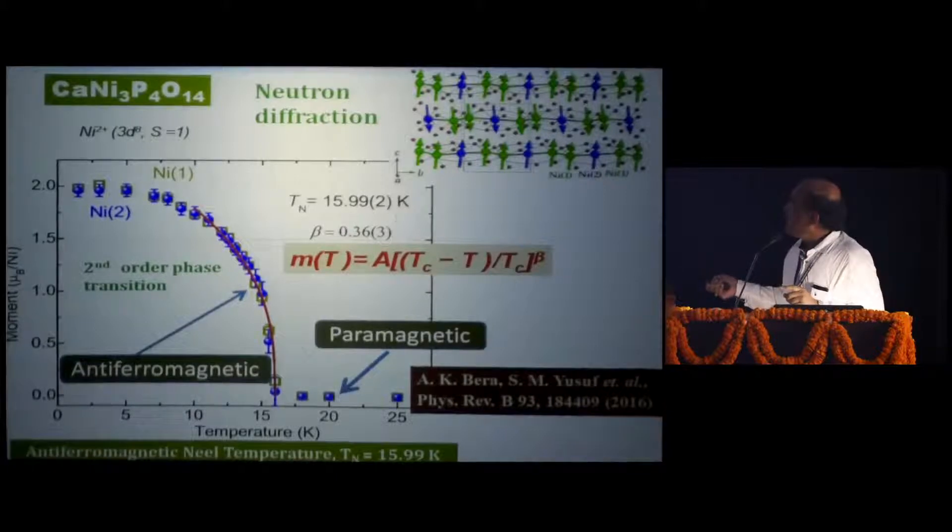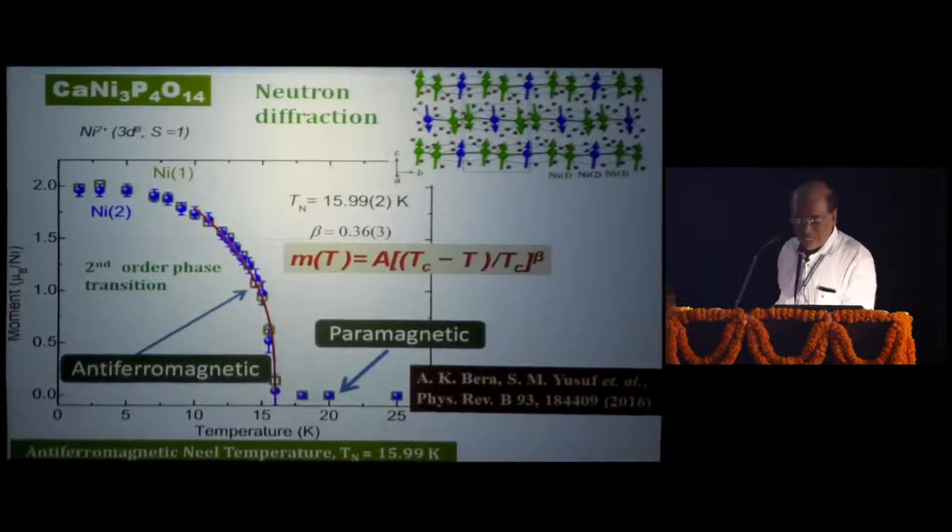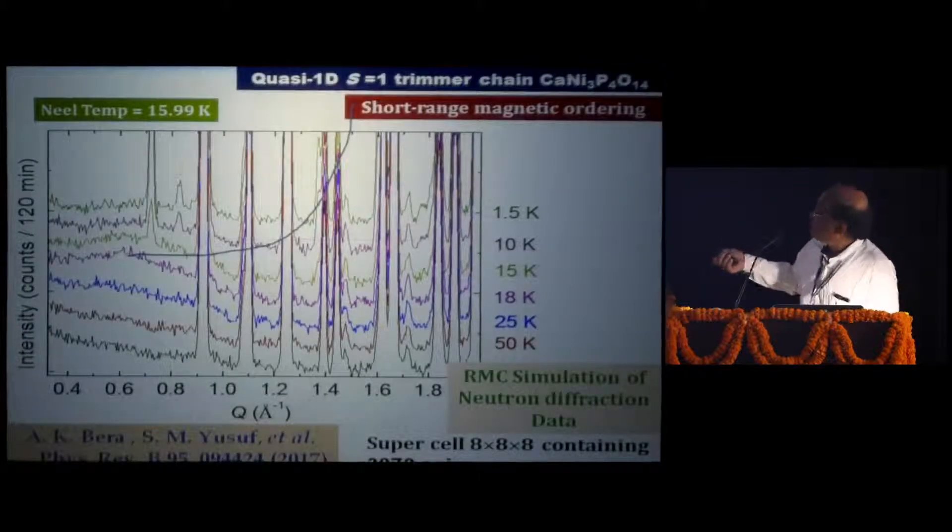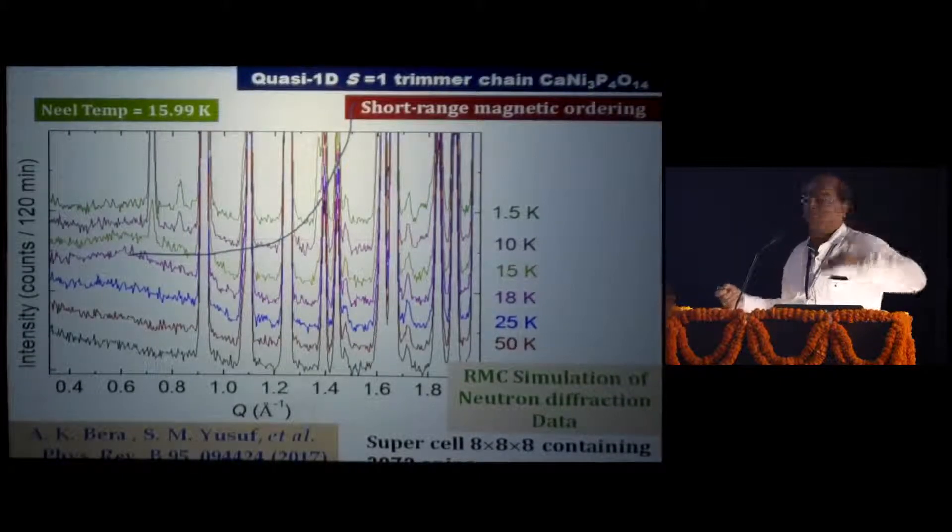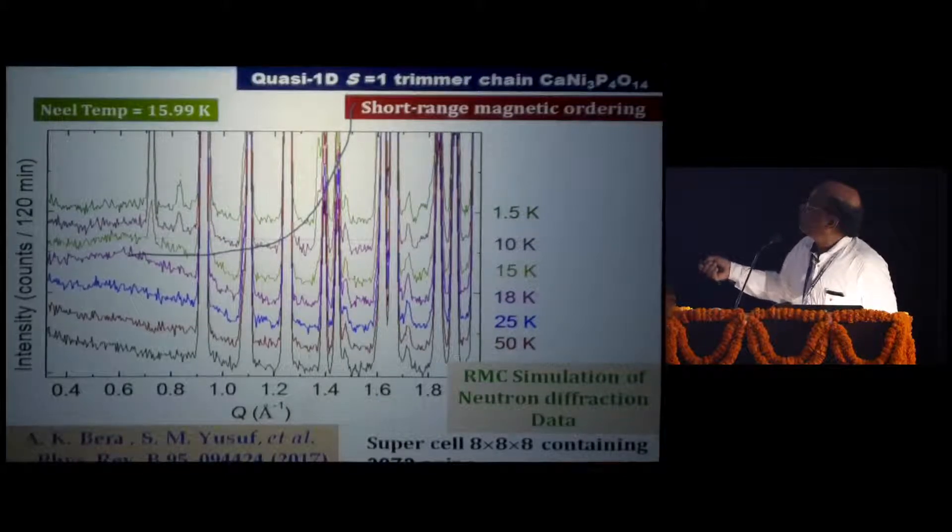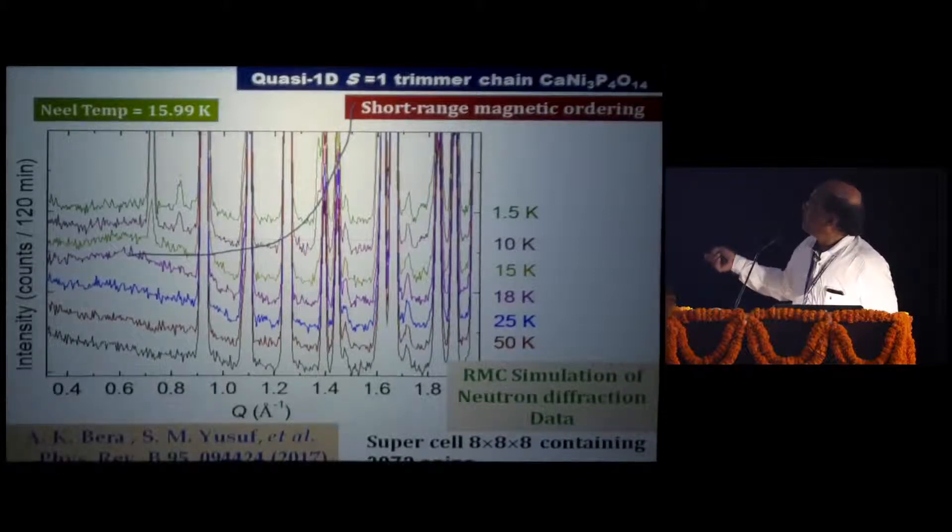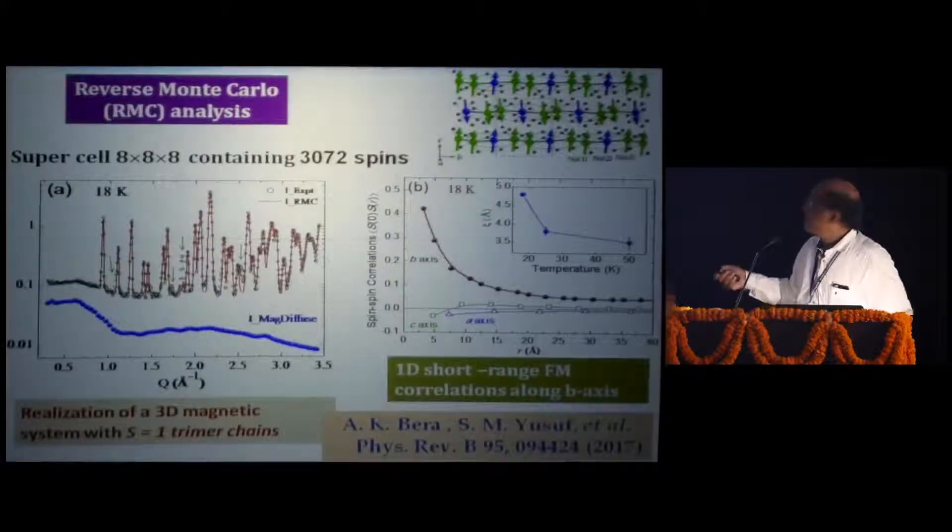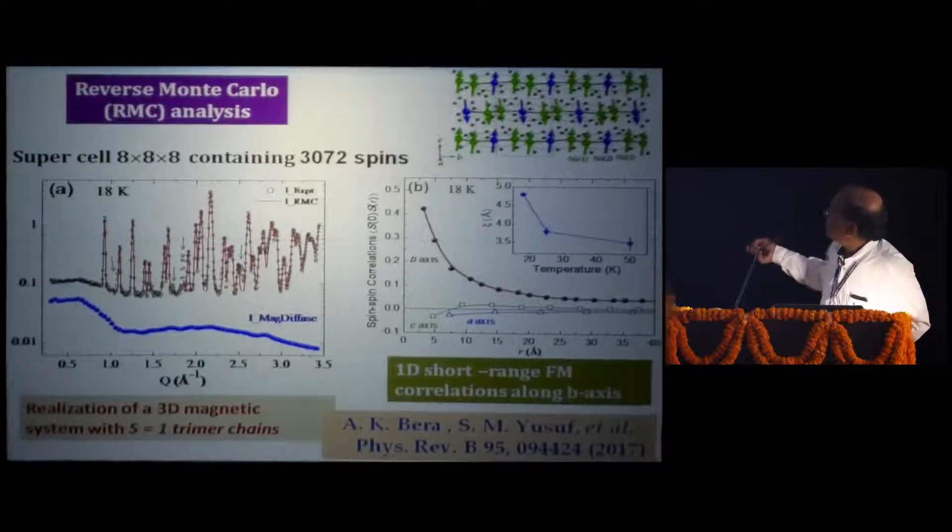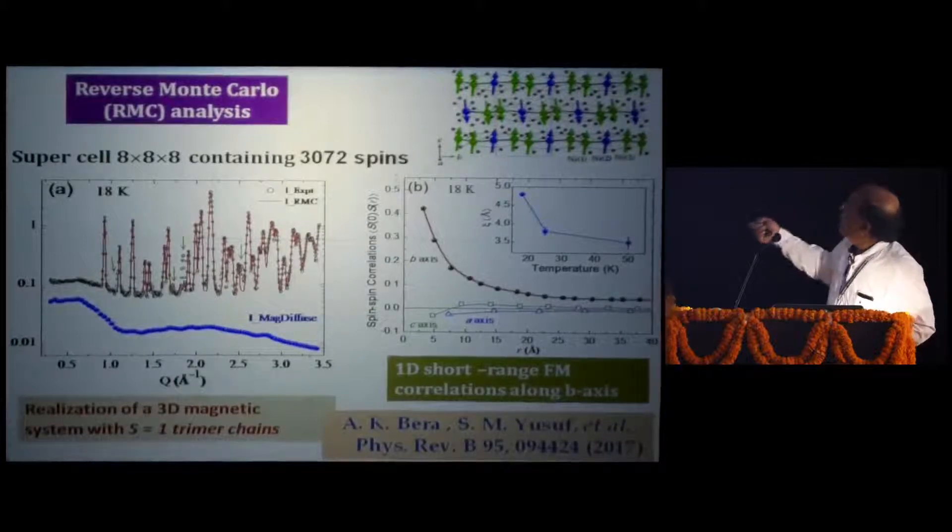The interesting point is, is there anything happening over this so-called paramagnetic state, disorder state? Answer is yes. For that, we have done more detailed neutron diffraction experiment at several temperatures little above this TN, Néel temperature, 15.99 K. We do see there are broad peaks, shoulders even above this Néel temperature, that is 18 Kelvin, 25 Kelvin. By doing this powerful reverse Monte Carlo simulation, we could do meaningful analysis by taking this kind of supercell 8x8x8. That gives us this kind of fitting. Finally, it tells there is a short-range magnetic correlation predominantly along the chain line along the b-axis with this correlation length, which is building up much above this three-dimensional long-range ordering, and then the long-range ordering sets in. This kind of rich information we do get by reverse Monte Carlo analysis.